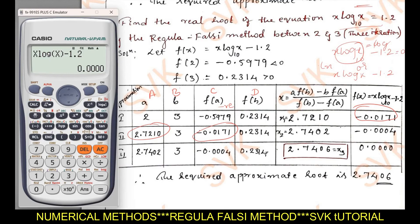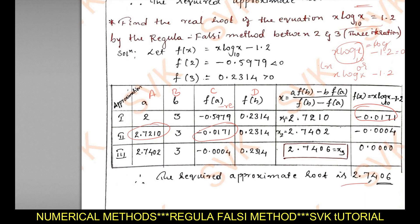Pressing equals again gives f(x₃) ≈ 0, confirming that 2.7406 is the required approximate root of the equation x·log₁₀(x) = 1.2. This is how to solve the problem using the Regula Falsi method.